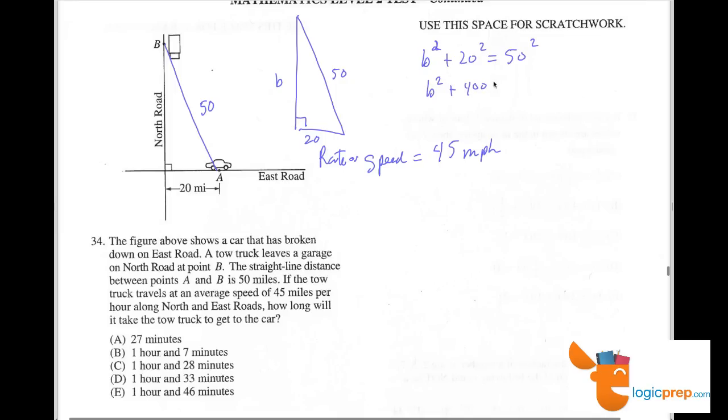B squared plus 400 equals 2500. B squared equals 2500 minus 400, which is 2100. And now I'm going to take the square root of 2100. I'll do that quickly on my calculator. And I get 45.825.